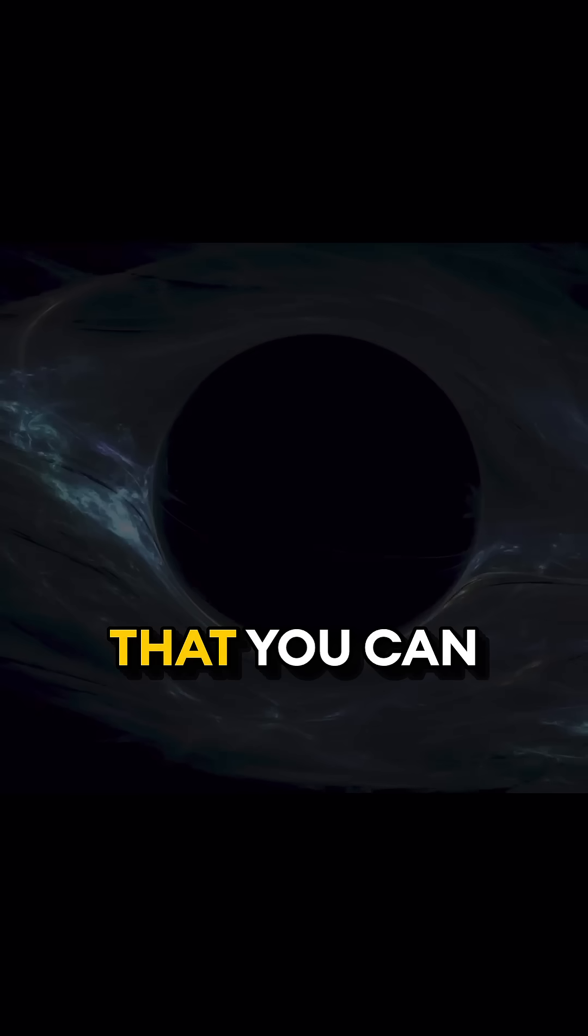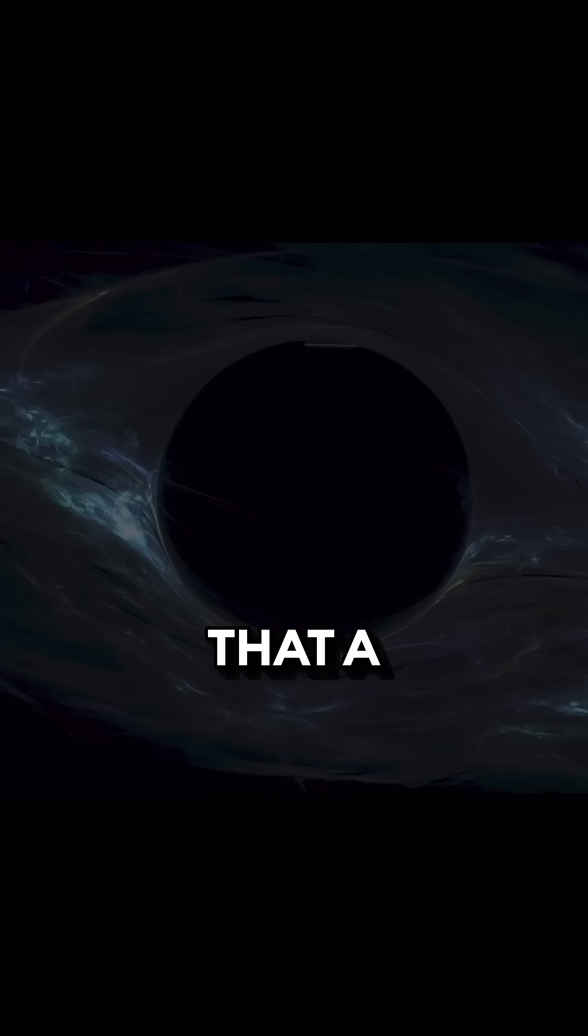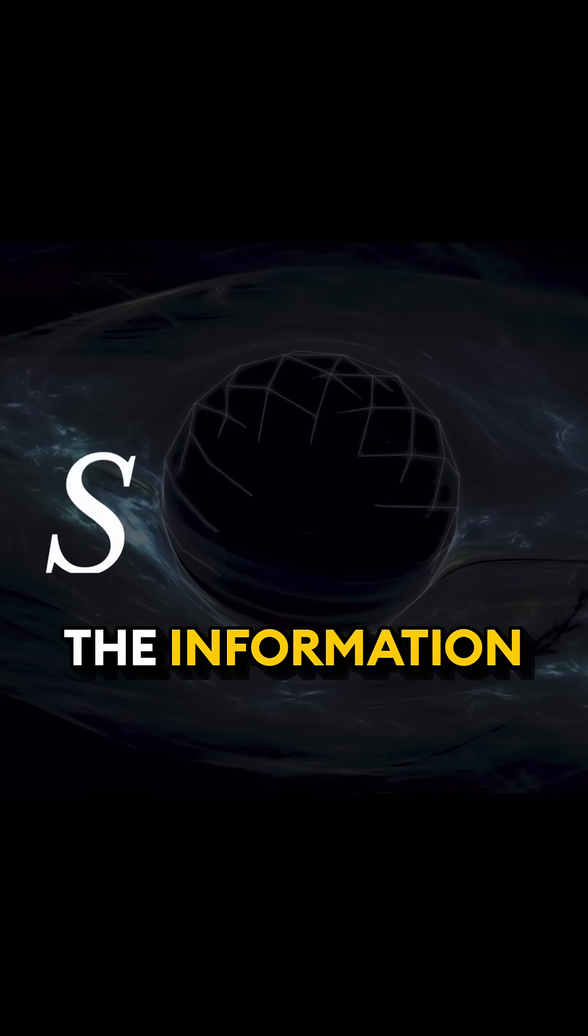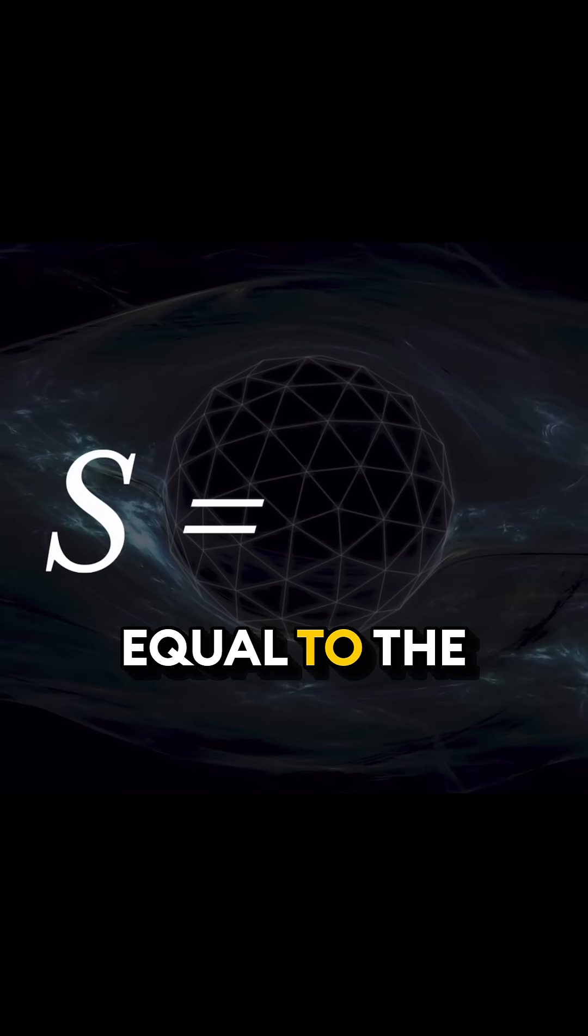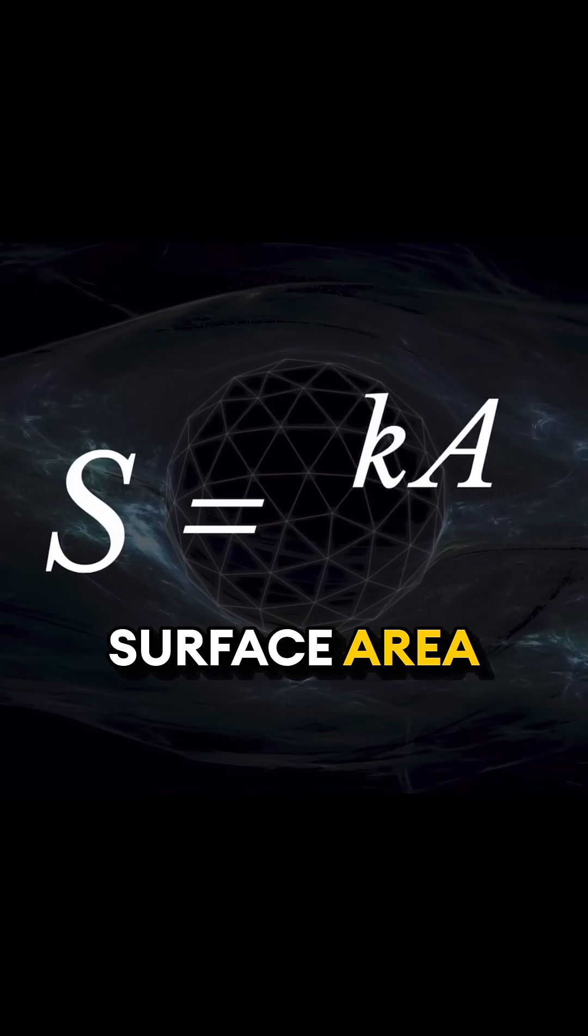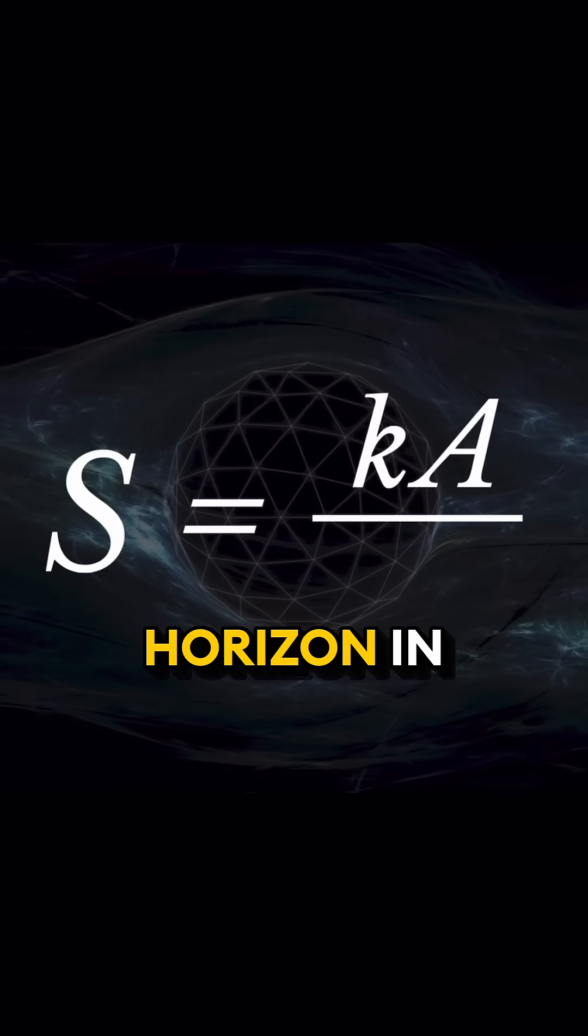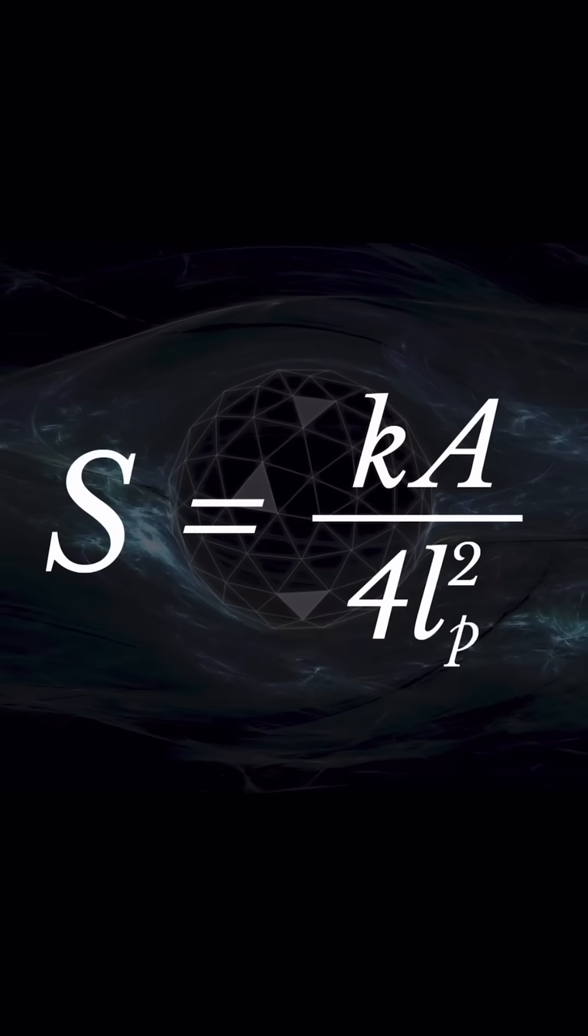Well, it turns out that you can calculate that a black hole stores in bits the information content is equal to the surface area of the event horizon in square Planck units.